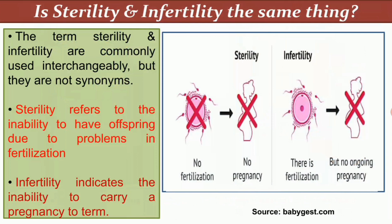The terms sterility and infertility are commonly used interchangeably but they are not synonyms. Sterility refers to the inability to have offspring due to problems in fertilization — it is related to fertilization-related problems. Infertility, on the other hand, indicates the inability to carry a pregnancy to term, so infertility is related to pregnancy problems.